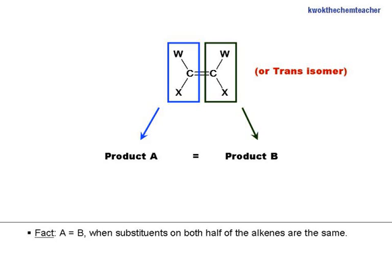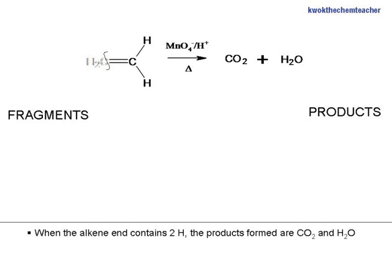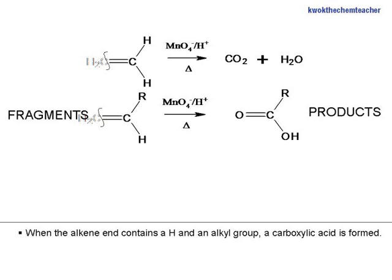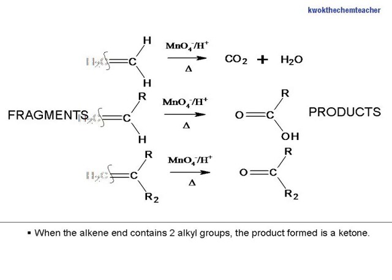A equals B when substituents on both halves of the alkene are the same. When the alkene carbon contains two hydrogen atoms, the products formed are carbon dioxide and water. When the alkene carbon contains a hydrogen and an alkyl group, a carboxylic acid is formed. When the alkene carbon contains two alkyl groups, the product formed is a ketone.